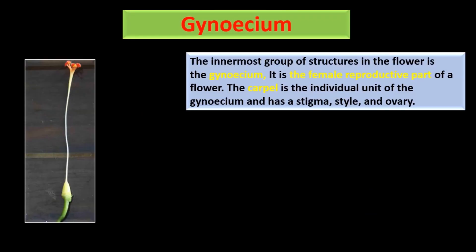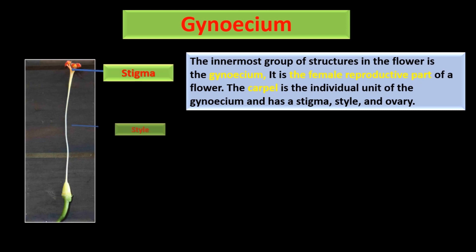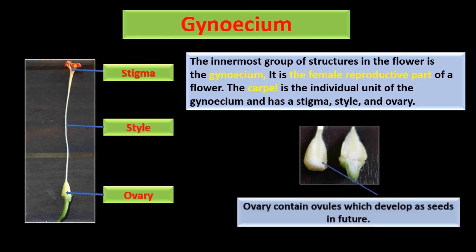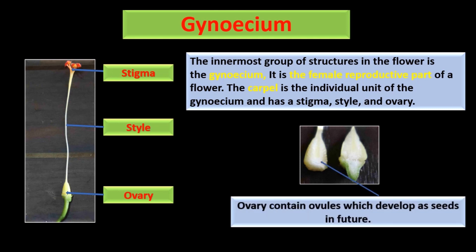The next part is gynoecium. The innermost group of structures in the flower is the gynoecium. It is the female reproductive part of a flower. The carpel is the individual unit of the gynoecium and has a stigma, style, and ovary. The ovary contains ovules which develop as seeds in the future.